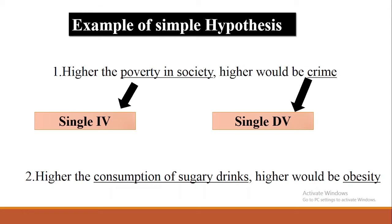Similarly, in the second example, consumption of sugary drinks is a single independent variable while obesity is the single dependent variable, because the obesity level depends upon the consumption of sugary drinks. So this is about the simple hypothesis.